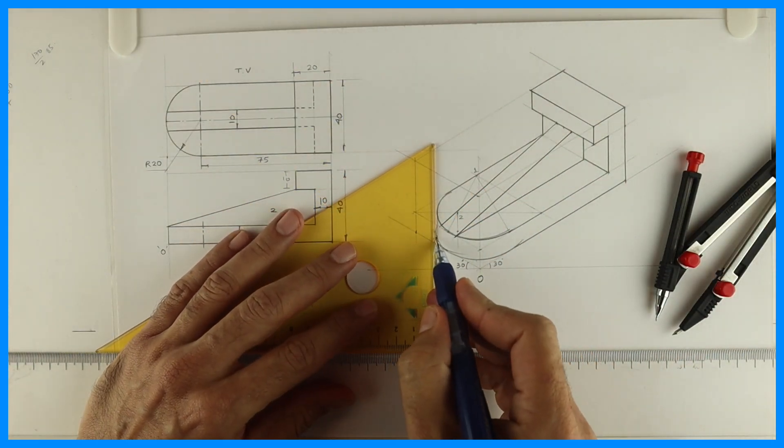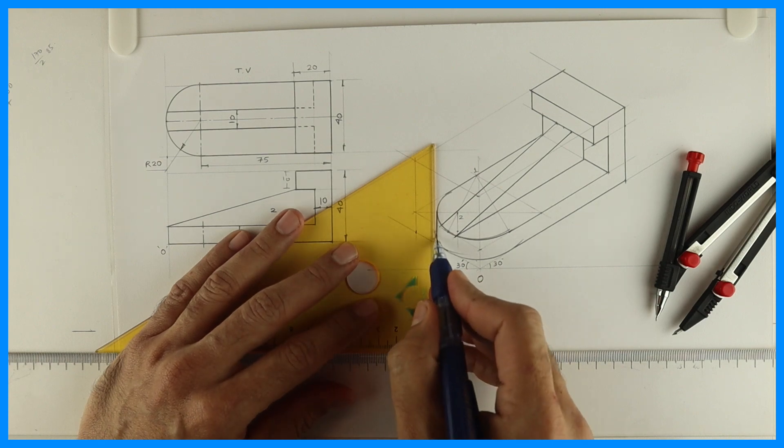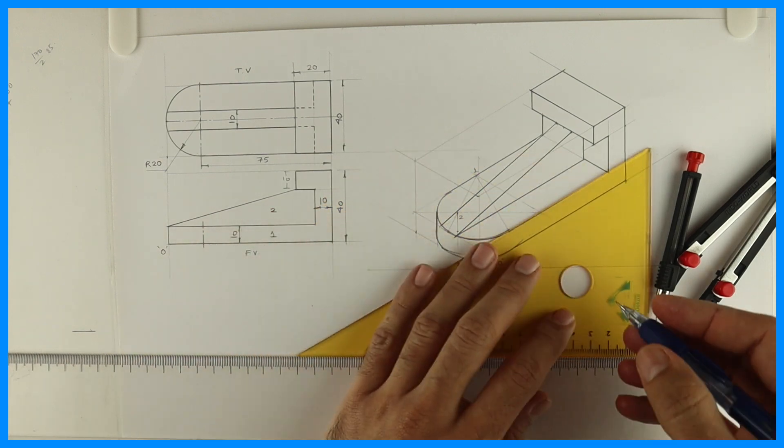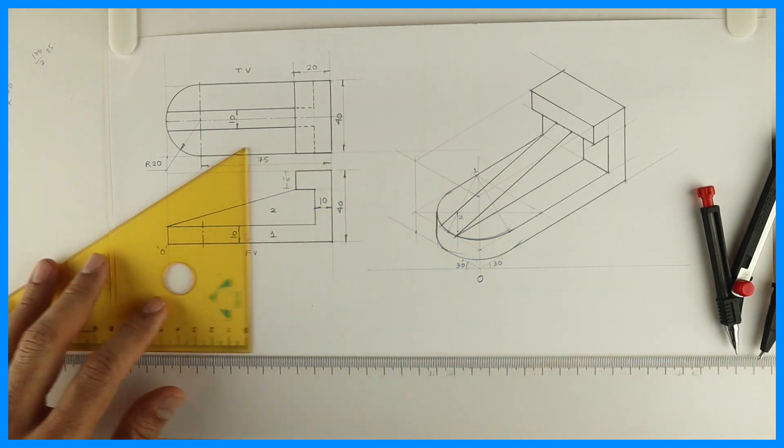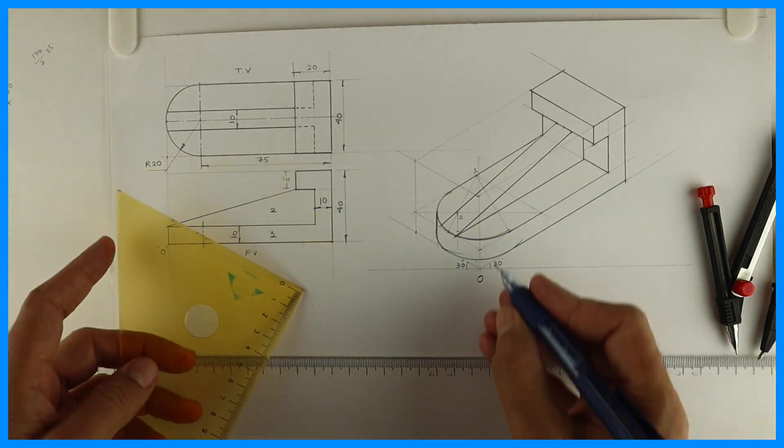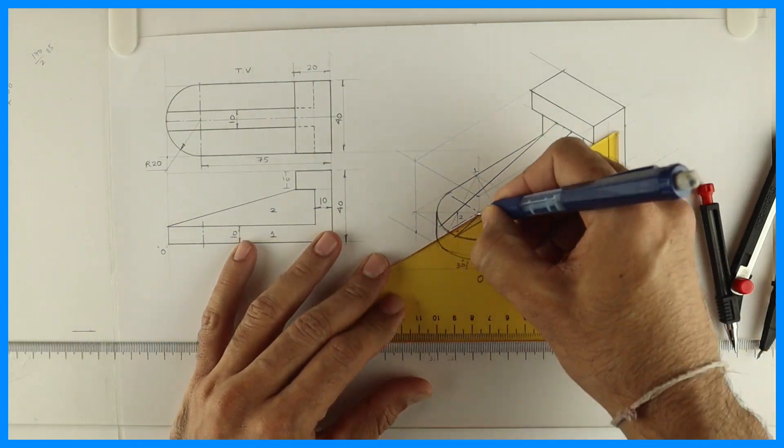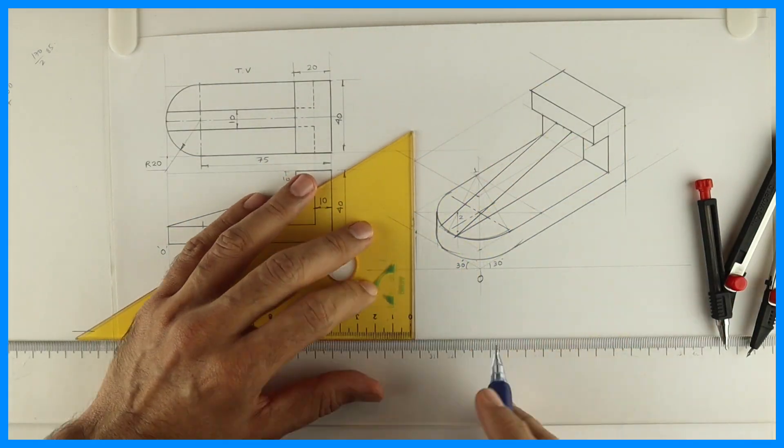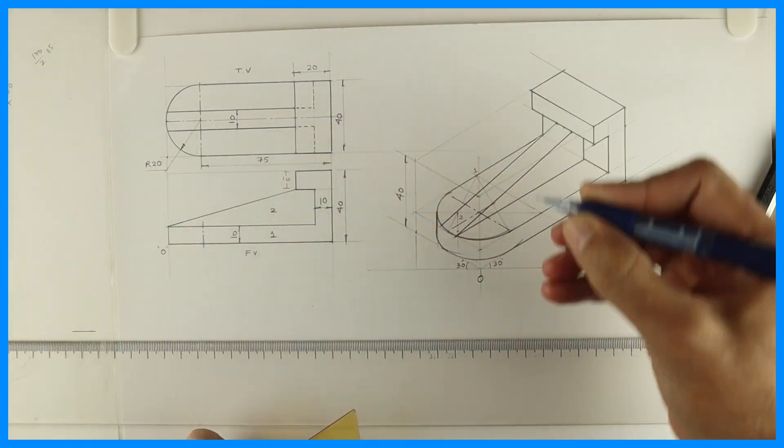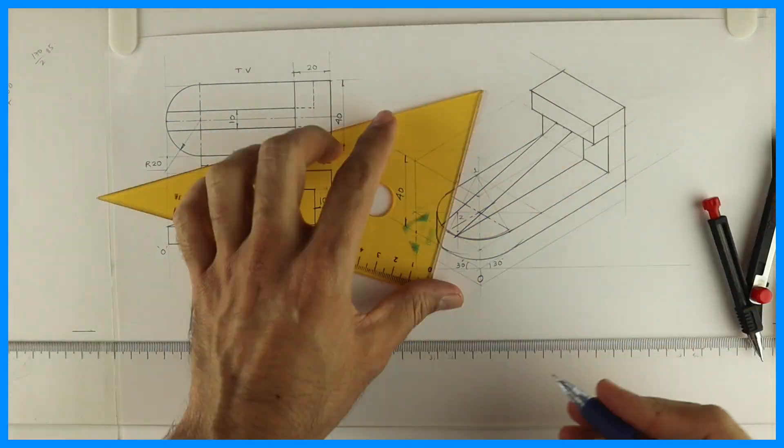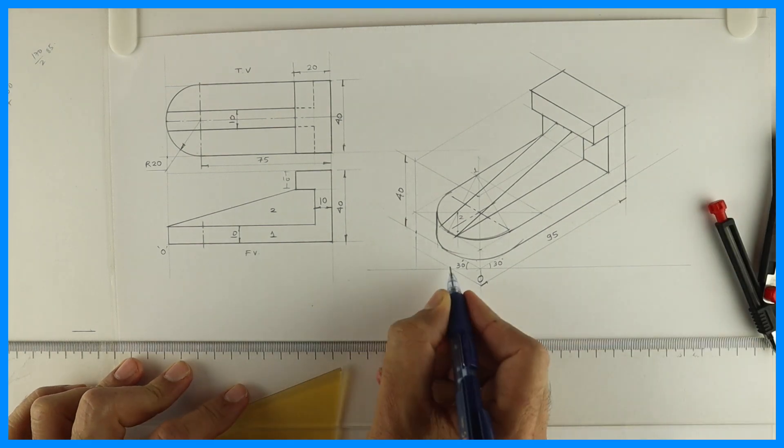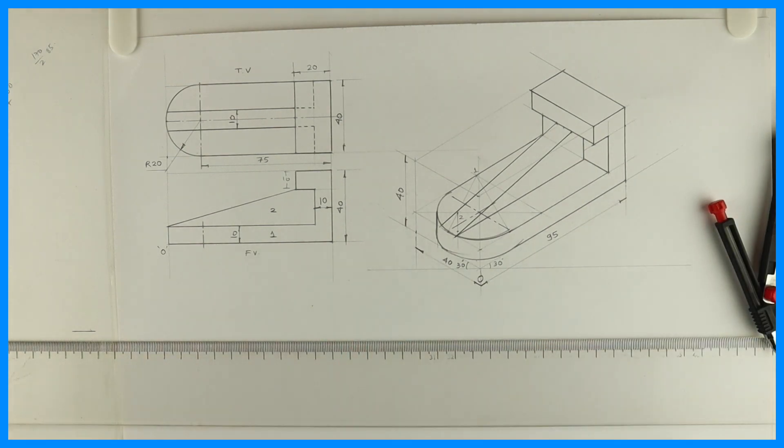So we have completed the sum. You can do axis lines as well as dimensioning. Thank you.